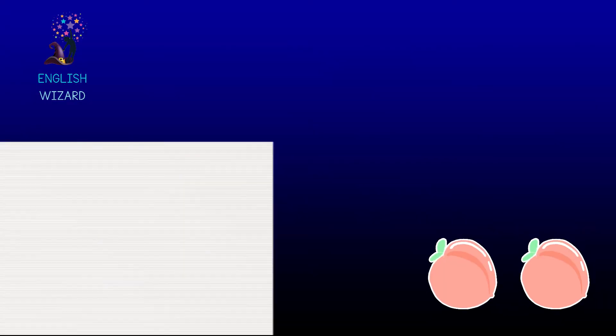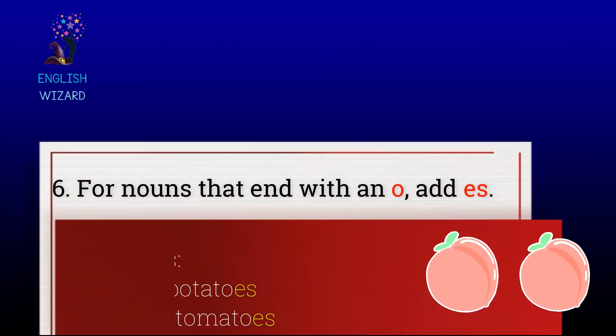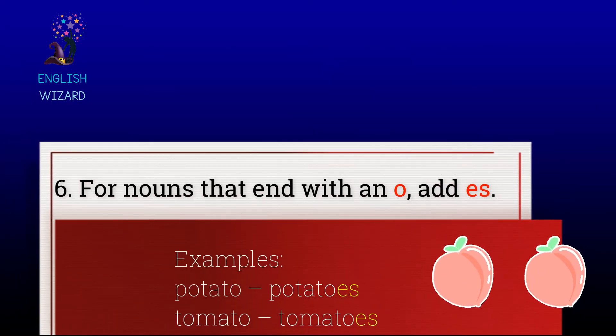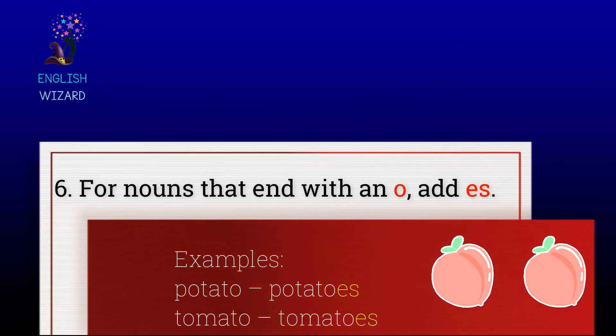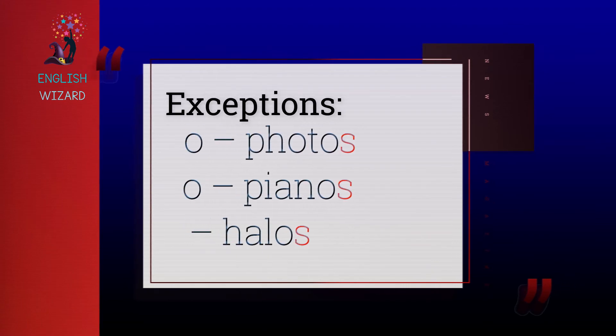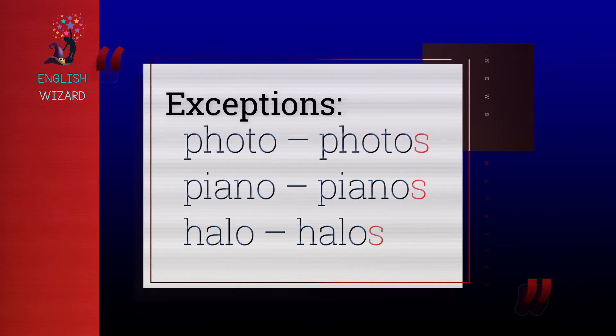For nouns that end with an -o, add -es. Examples: Potato, potatoes. Tomato, tomatoes. Exceptions: Photo, photos. Piano, pianos. Halo, halos.